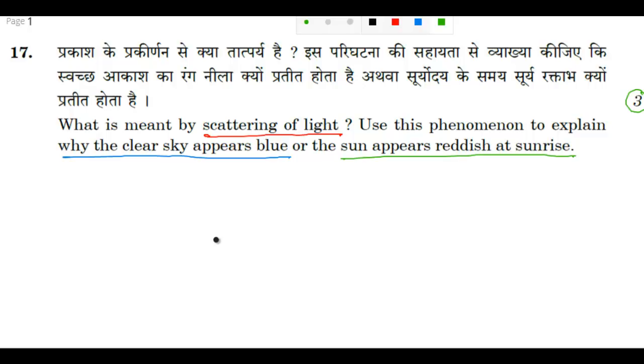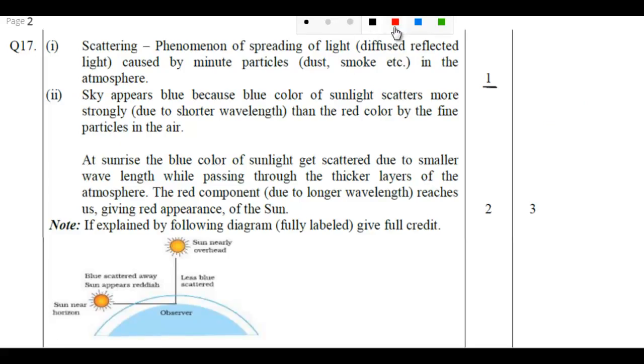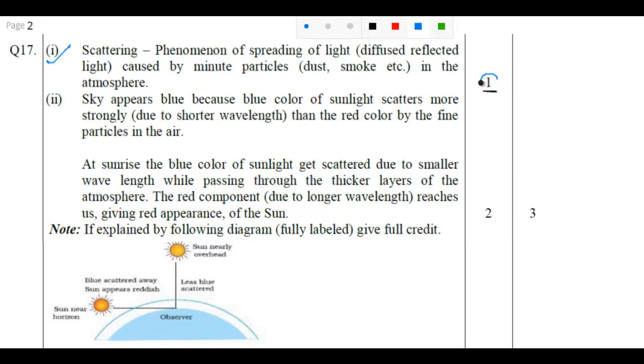You know that scattering of light is basically the spreading of light as a result of collision with the particles that are present in the medium. So I will show you the answer. Scattering is basically the phenomenon of spreading of light caused by minute particles that are present in the atmosphere. The answer of this particular question will award you one mark.